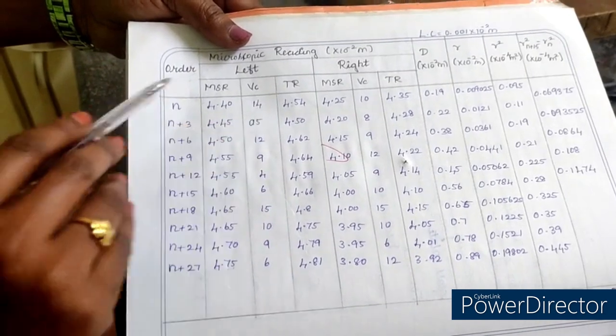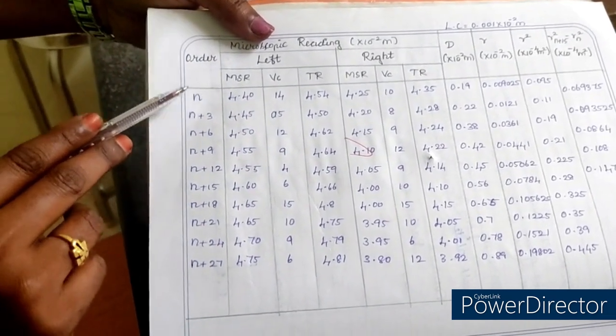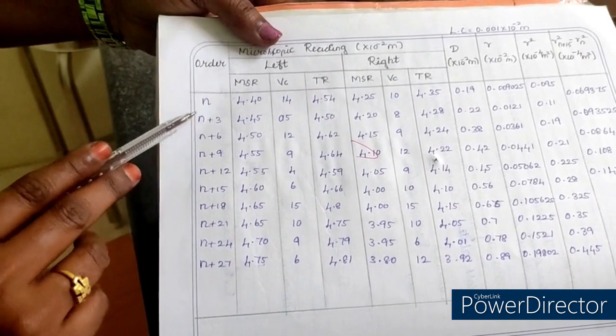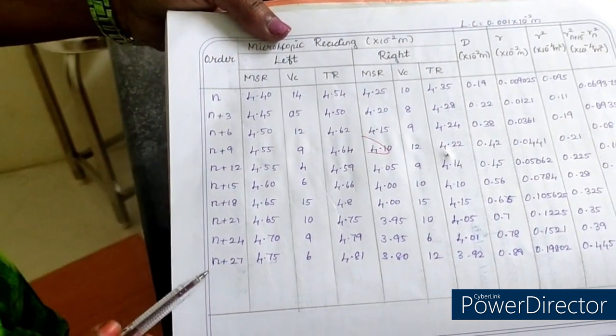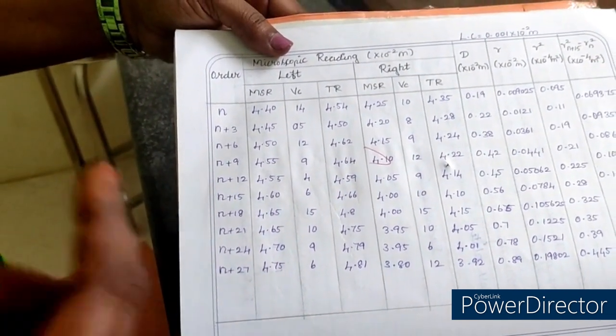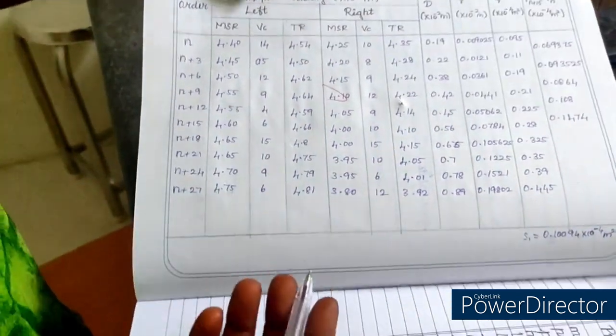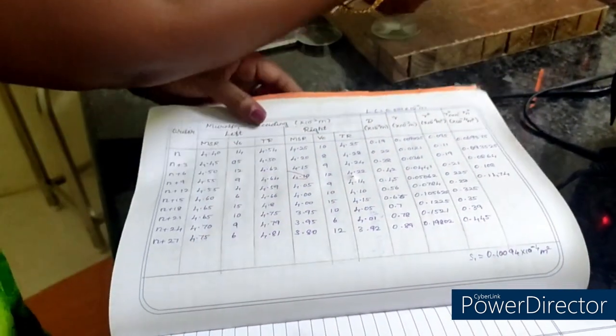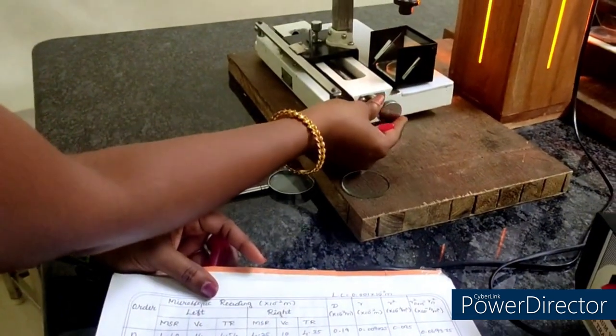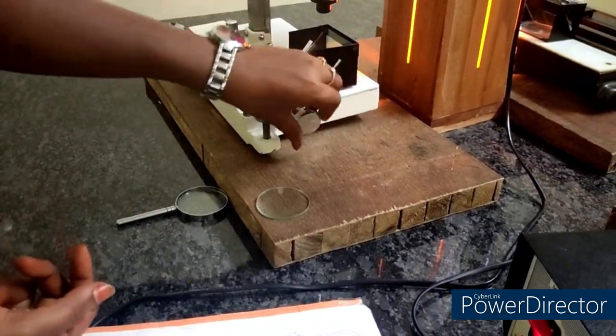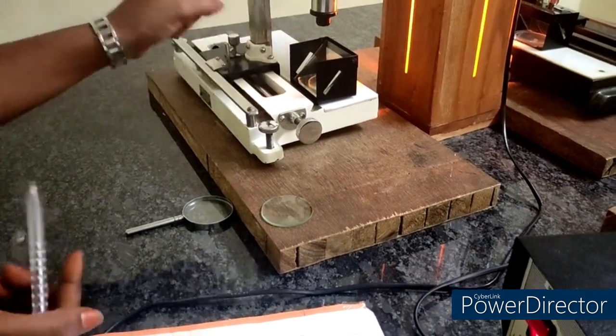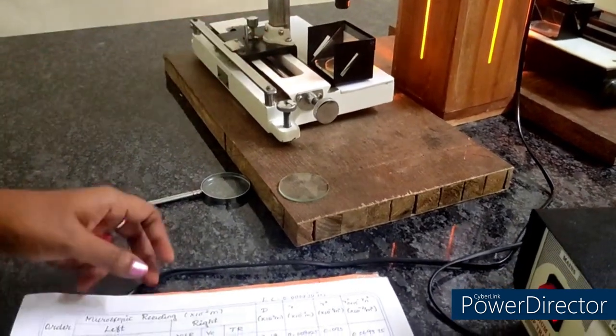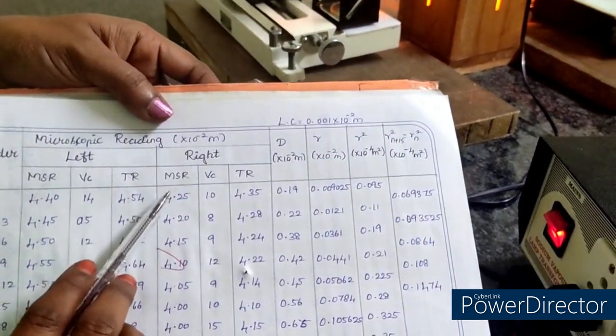For this left side we have to observe the readings for n, n plus 3, n plus 6, n plus 9 up to n plus 27. How much lines we have we can observe. Then opposite, for the right side by adjusting this microscope knob, I will take the another readings.